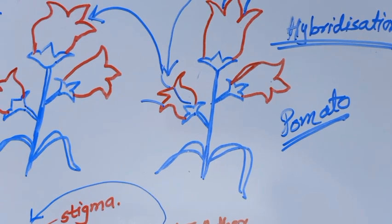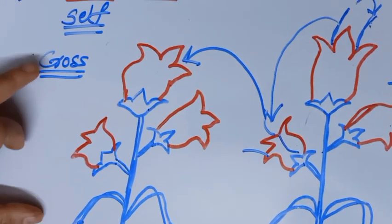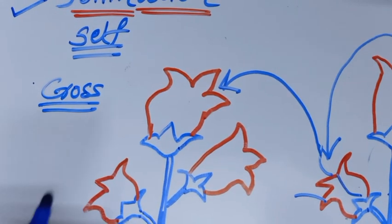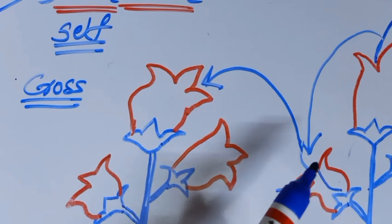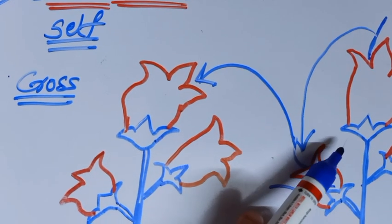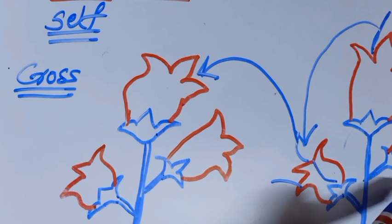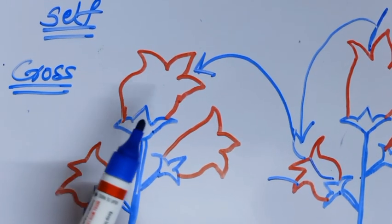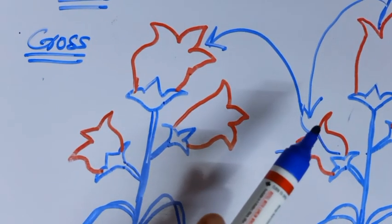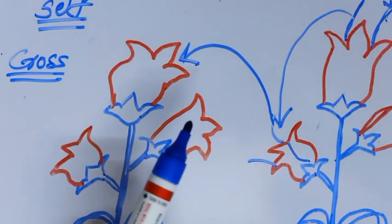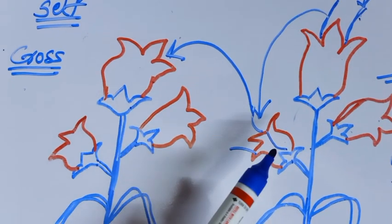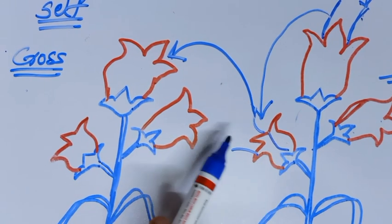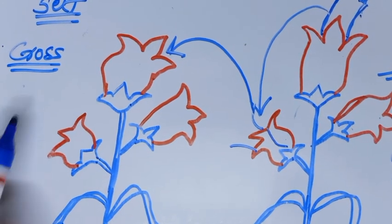So these are the 3 types of pollination, but we have to study only self-pollination and cross-pollination. In self-pollination, pollen transfer occurs within the same flower or between 2 flowers of the same mother plant. In cross-pollination, 2 different plants of the same species are involved — pollen transfers from one flower to another flower belonging to 2 different plants but of the same species.